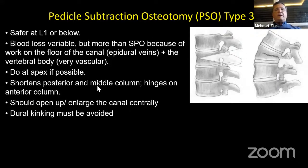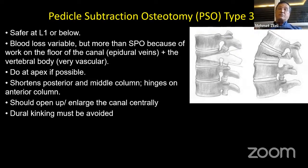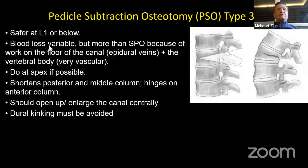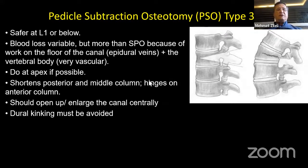Pedicle subtraction osteotomy can provide 30 to 35 degrees of reduction. In that osteotomy, you should remove transverse processes, all the facet joints, lamina, spinous process, and one-third of the posterior part of the vertebral body. The anterior part you can go to the ALL, however you must not open ventrally. It is safer at L1 or below. Blood loss can be very high because of the work on the floor of the canal — epidural veins may bleed a lot. It should be done at the apex of the kyphosis.